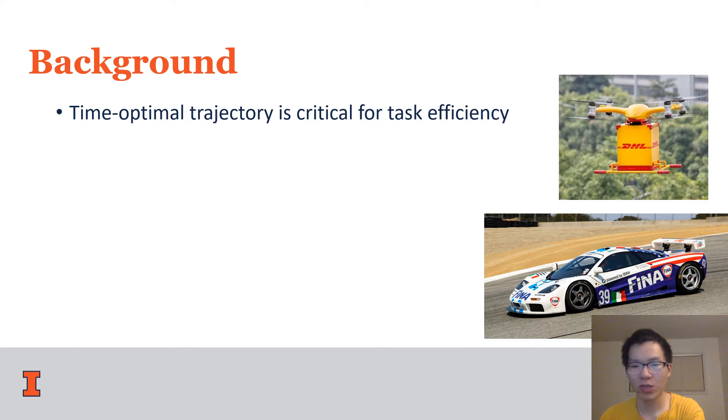Time optimal trajectory is critical for tasks where efficiency is of top priority. For example, for drone delivery and race cars, it enables the robot to reach the target faster.